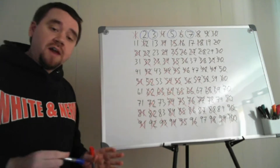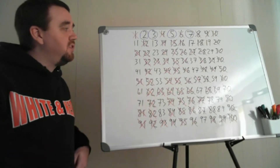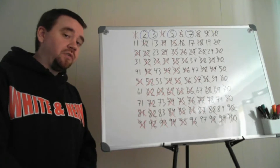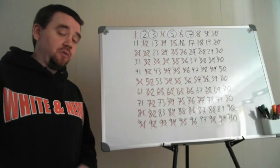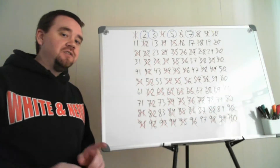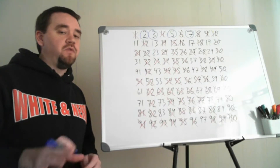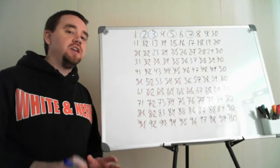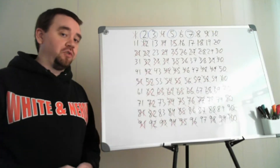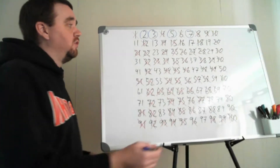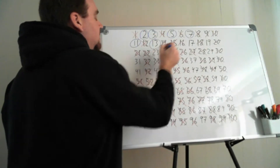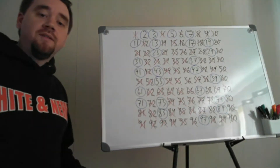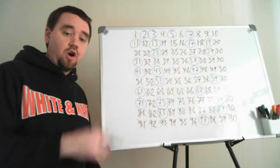Now we can actually stop and say that at this point I've already crossed off all the composite numbers on the chart — all remaining numbers are prime. I'll leave it to you to figure out the trick that lets you know when you're done with the Sieve of Eratosthenes for any size chart. I'll post a secondary video with the answer. For now, take my word for it and I'll circle the remaining primes: 11, 13, 17, 19, and so on. All the prime numbers between 1 and 100 are what we have circled.